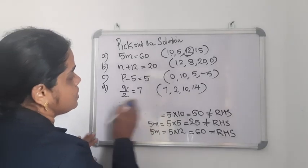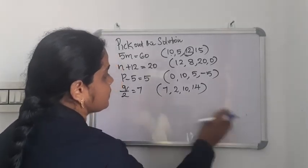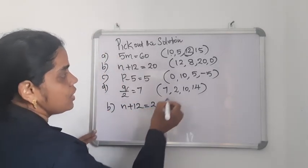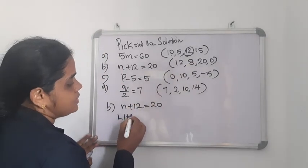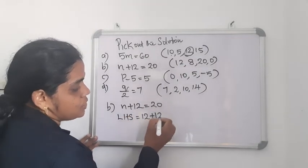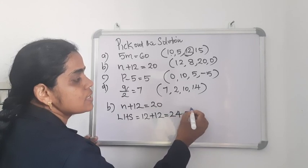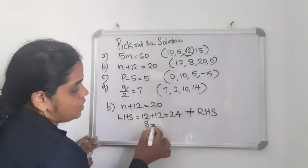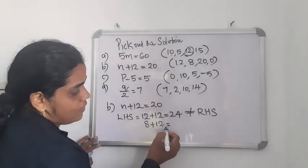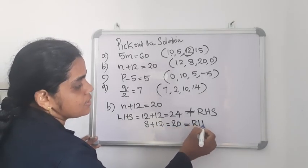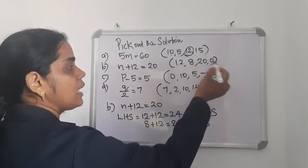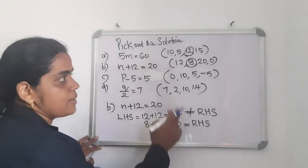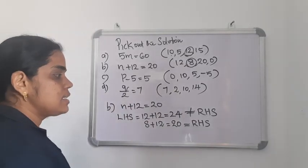Next: N plus 2 equal to 20. Options given — we substitute 12 first: 12 plus 2 is 14, but wait, 12 plus 12 is 24 — not equal to RHS 20. Next option 8: 8 plus 12 is 20 — equal to RHS. So the solution of this equation is 8.